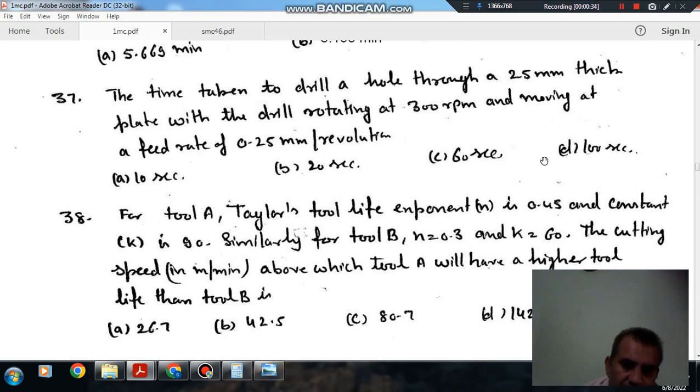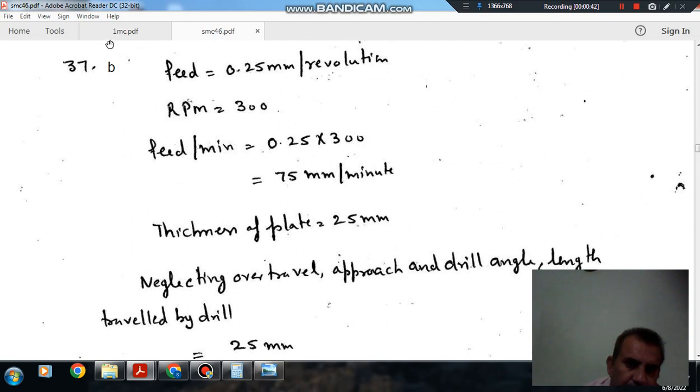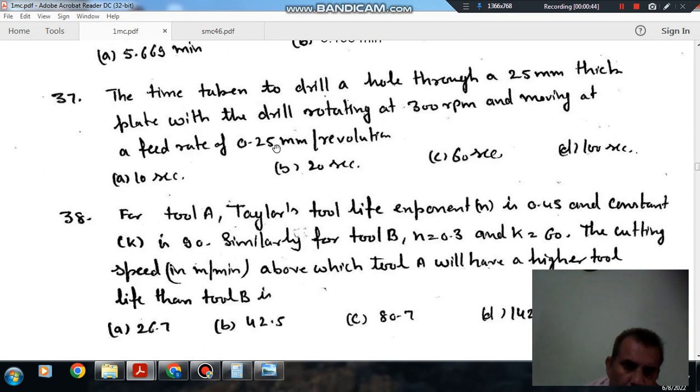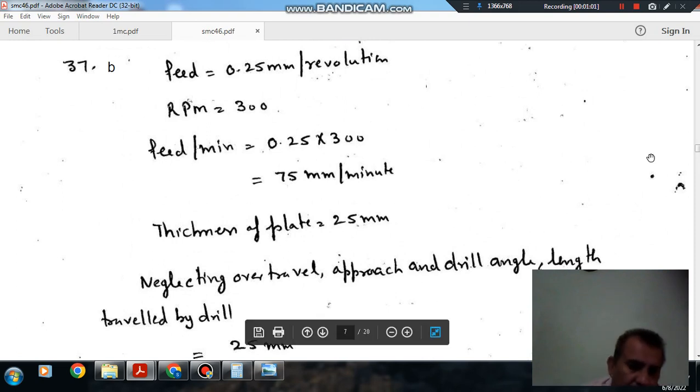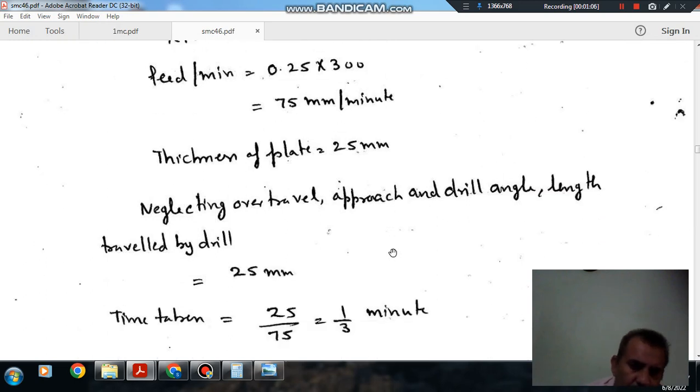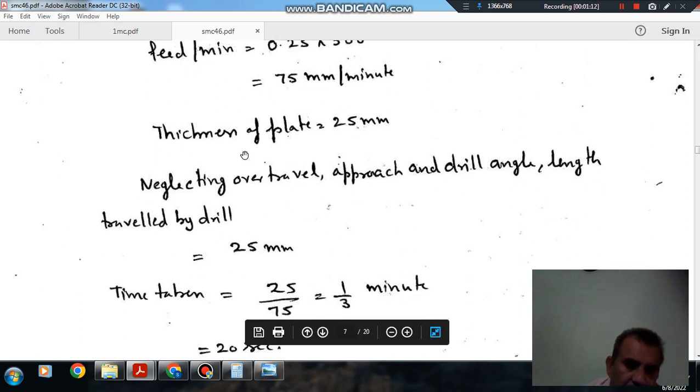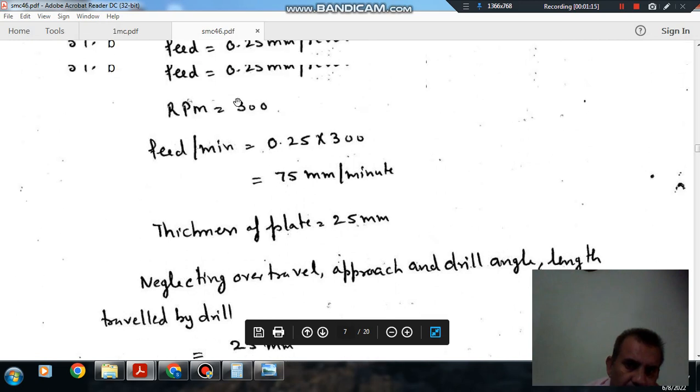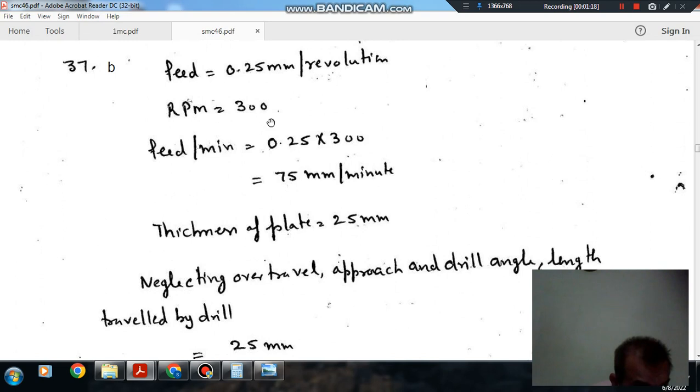So here the feed is given as 0.25 mm per revolution and the thickness of the plate is given as 25 mm and rpm of the drill is given as 300 rpm. As no drill angle and no approach and no over travel is given, so we will neglect these quantities. So we will take only the length of the thickness of the hole to be drilled.